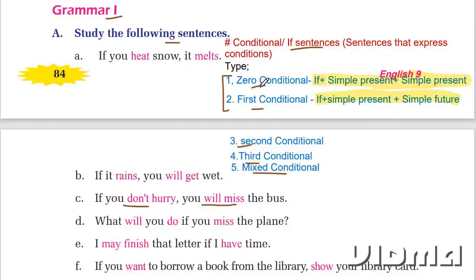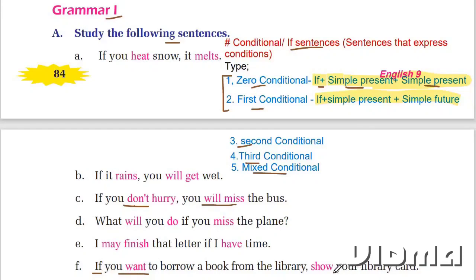Zero conditional sentences are those if-sentences that we use to talk about things that are generally true. The structure is: if + simple present + simple present. For example: 'If you hit snow, it melts.' Another example: 'If you want to borrow a book from the library, you show your library card' — both clauses are in simple present, so this is zero conditional.